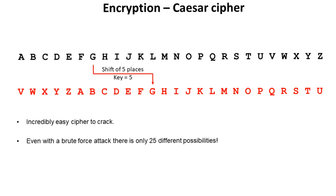This is an incredibly easy cipher to crack. Even with a brute force attack there are only 25 possible shifts that any given letter can translate into. Although we have 26 letters in the alphabet, a shift key of zero would mean the letter maps to itself, so there would be no encryption at all. If this were a large block of text encrypted using the Caesar cipher, it would also be very easy to perform a frequency analysis on the letters. Whichever letter appeared the most is most likely to be E, as this is the most common letter used in the English language.